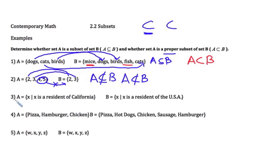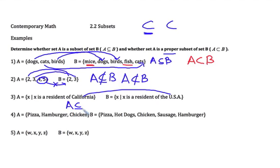In our next example, we have some set builder notation. Set A is the set of all X's where X is a resident of California — so all Californians. Set B is X such that X is a resident of the United States. Are all residents of California also residents of the United States? Well, California is part of the United States, so A is a subset of B. And since there are residents in the US not in California — like people in Arizona — A is also a proper subset of B.